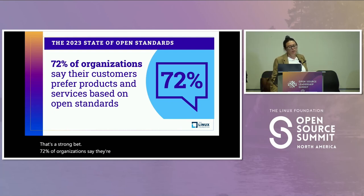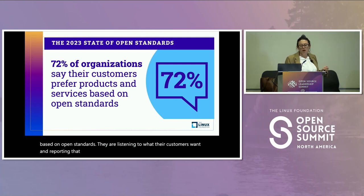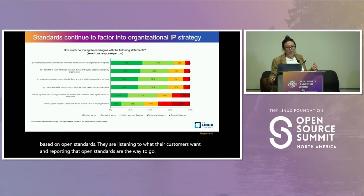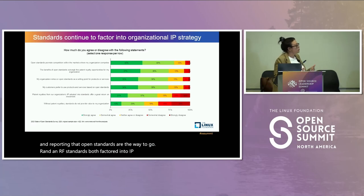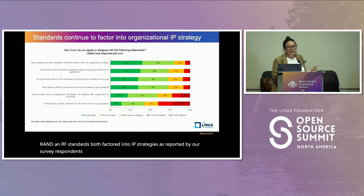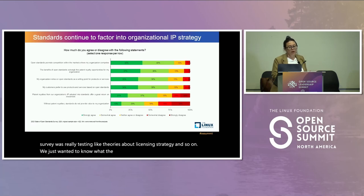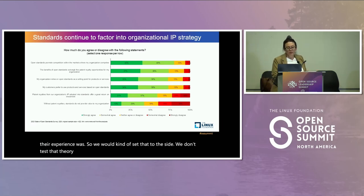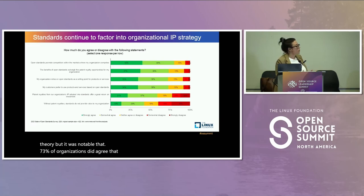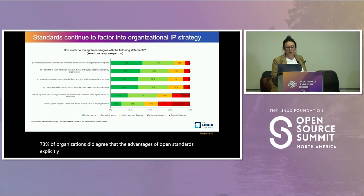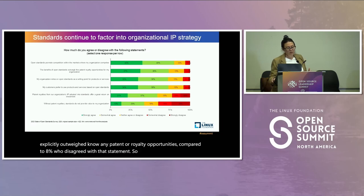72% of organizations say their customers prefer products and services based on open standards — they're listening to what their customers want. RAND and royalty-free standards both factored into IP strategies as reported by our survey respondents. One thing we didn't really get into was testing theories about licensing strategy — we just wanted to know what preferences and experiences were. Notably, 73% of organizations agreed that the advantages of open standards explicitly outweighed any patent or royalty opportunities, compared to only 8% who disagreed with that statement.